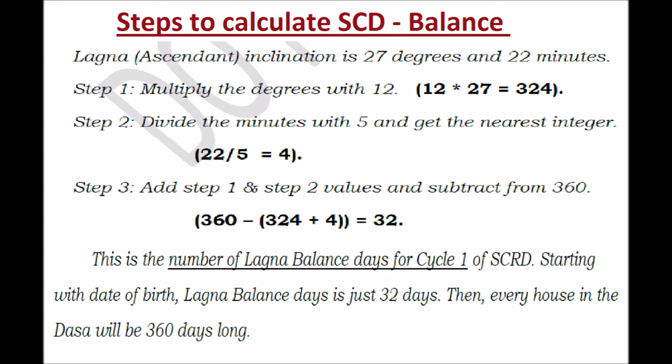The first step: multiply the degrees with 12. Here it is 27 degrees, so 27 times 12 is 324. The second step: pick the minutes and divide by 5 and get the nearest integer. So 22 divided by 5 is equal to 4 — that's the nearest integer possible.